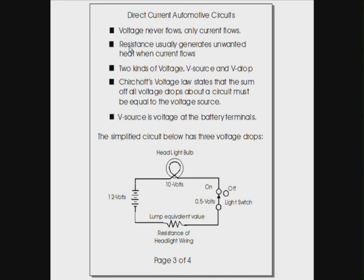The resistance usually generates unwanted heat when current flows. These wires have a resistance, unless we have a lump equivalent value. We could draw a million little tiny resistors along all these wires. That's kind of stupid. We'll just put an amount equal to the sum of all these millions of tiny resistors. Equals one big resistor. It's called an equivalent value.